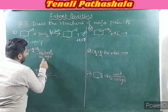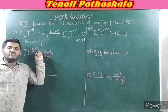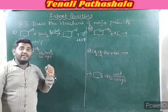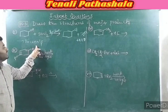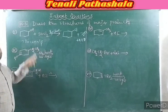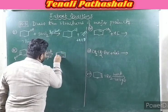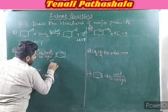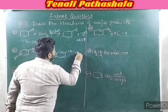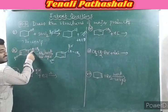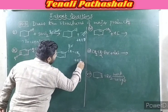Second reaction: Br₂ with heat and UV light — bromination. Bromination proceeds according to the stability of the carbocation. Here you get a secondary carbocation and here a primary carbocation. So 100% bromine attaches to the middle carbon. Add bromine to the middle carbon: one H is replaced by bromine, and HBr is eliminated as a byproduct.